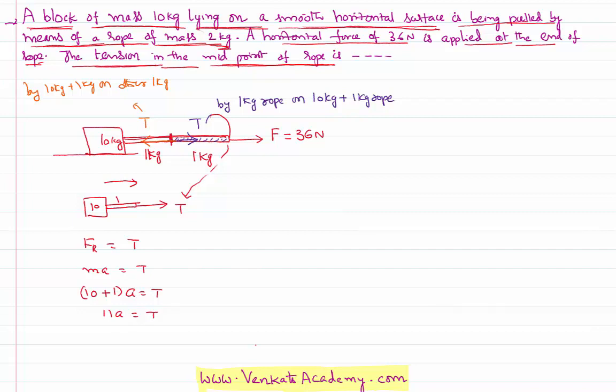I can similarly draw a free body diagram for the second part also. The second part is 1 kilogram body. On this, 36 Newtons is acting in the forward direction and the tension by the other piece in the backward direction. Obviously, as you have applied external force in the forward direction, the system is going to move in the forward direction.